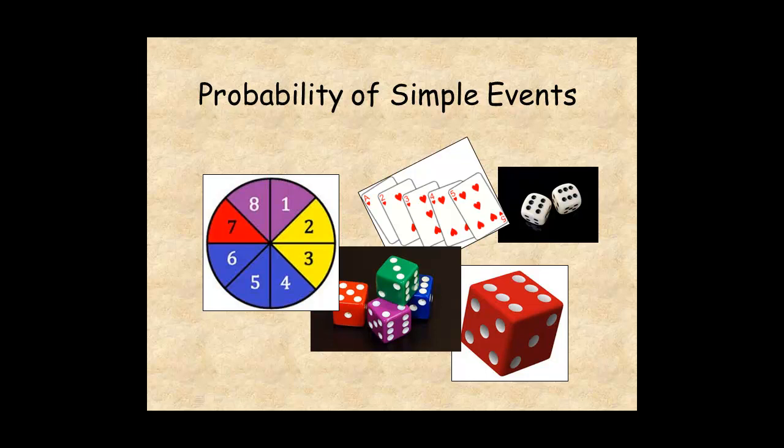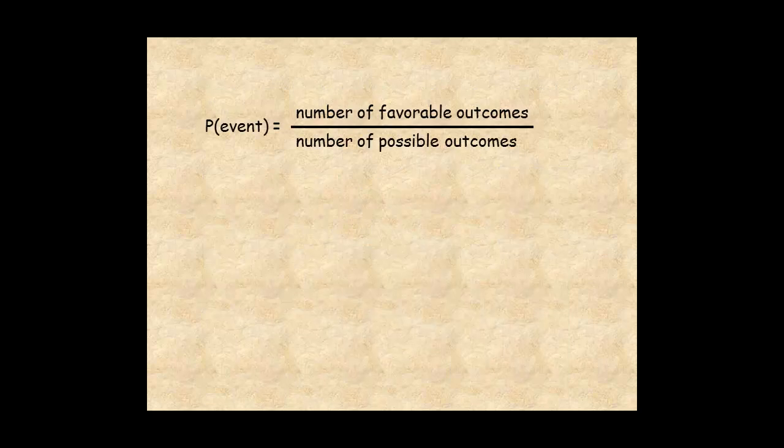This lesson shows you how to calculate the probability of a simple event. Probability is the chance that some event will occur. It's defined as the ratio of the number of favorable outcomes over the number of possible outcomes.